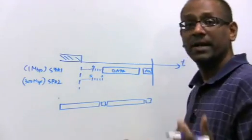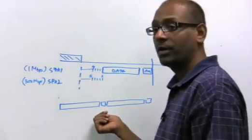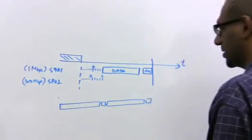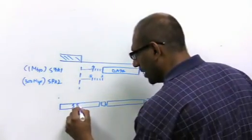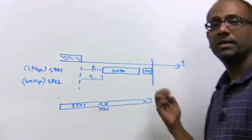Notice the amount of data being sent might be exactly the same, it's just that the amount of time taken by station two is far lower because it's going 300 times as fast. So if you just look at this, it's pretty clear that station one is actually dominating the airtime even though both of them are sending the same number of packets.